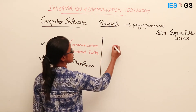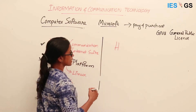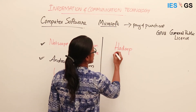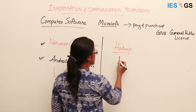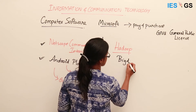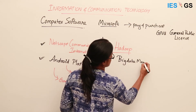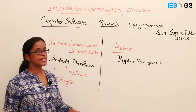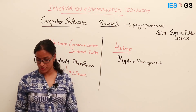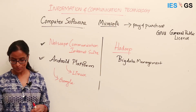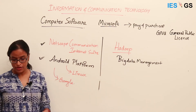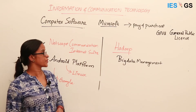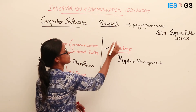Another software gaining importance now is Hadoop, developed by Apache. Hadoop is especially for big data management. It helps in distributed storage and processing using two software frameworks — one framework for distributed storage and another for processing — and this is also made open source by the developers.